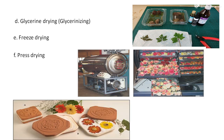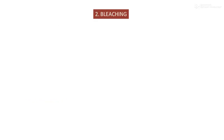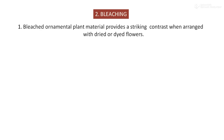Press drying is again a simple technique. We use a wooden press or stone press, and through this technique the plant material obtained can be used for beautiful arrangements or the preparation of handicrafts. Some white-colored or bleached flowers are useful for the preparation of attractive arrangements. Bleached ornamental plant material provides striking contrast when arranged with dried or dyed flowers.